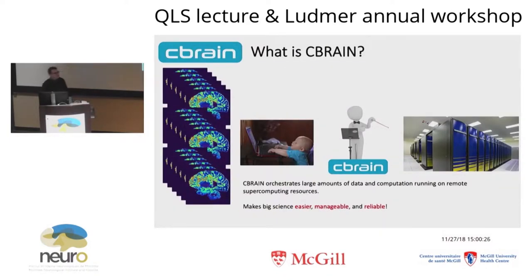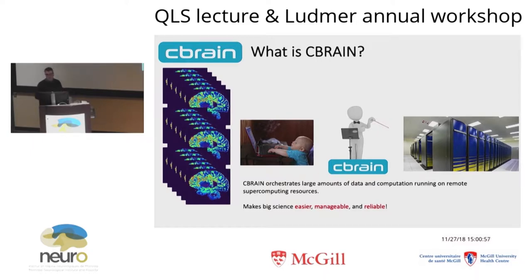So what is C-Brain? C-Brain is essentially an orchestration layer. It allows you to take a large amount of data — say, a number of different neuroimages or pieces of data that you'd like to process. You define one thing you want to do to that data, and then it gives you a simple web interface. You say 'I want to do this thing on all of this data,' hit go, and C-Brain orchestrates everything, distributing it to different supercomputing resources, cloud resources, and data resources throughout the country. It's attempting to make big science easier, manageable, and reliable.